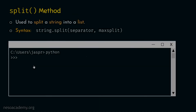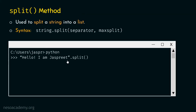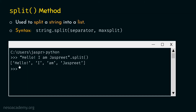Now let's move on to the next example. This time we type the string 'Hello! I am just breathe' and call dot split with no arguments. Since no arguments are provided, separator and max split take their default values — any whitespace character is the separator, and max split is minus one, meaning no limit on splits. So we will get four items in the list: 'Hello!', 'I', 'am', and 'just breathe'. The separations occur at the whitespace positions. If we hit enter, we get this list with four items.